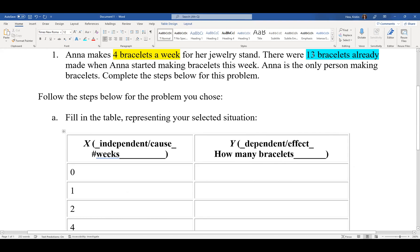So we know that there were 13 bracelets before she'd done anything. So that means after zero weeks there were 13. After one week, she made another four bracelets plus the previous 13. So four plus 13 is 17.